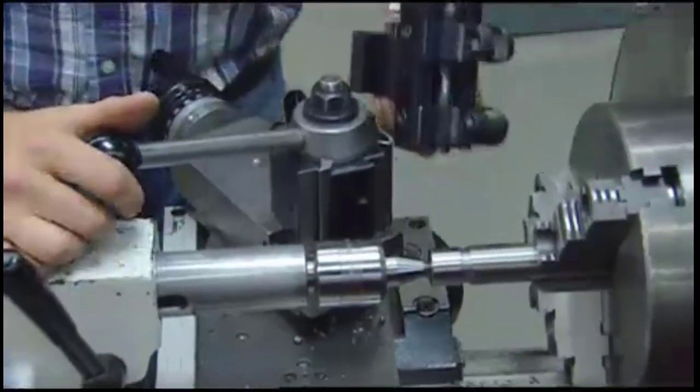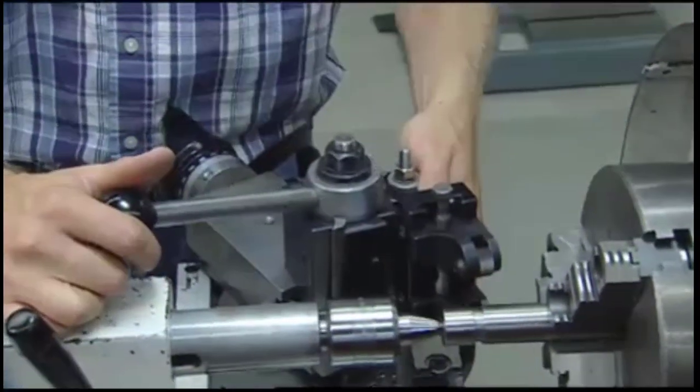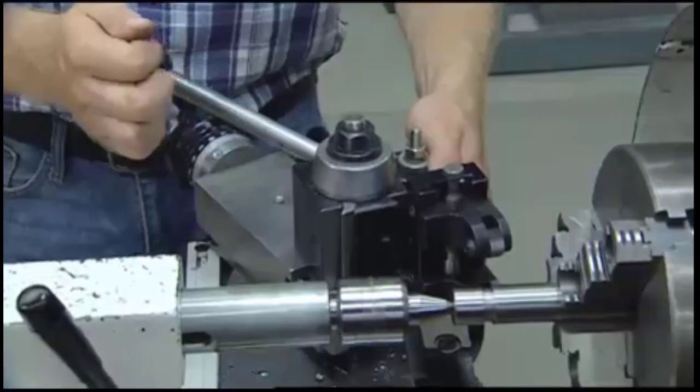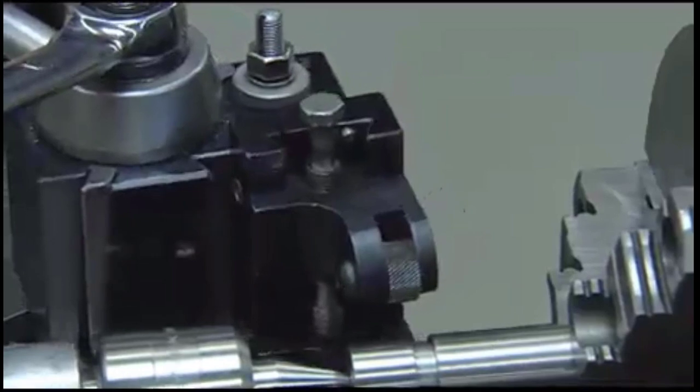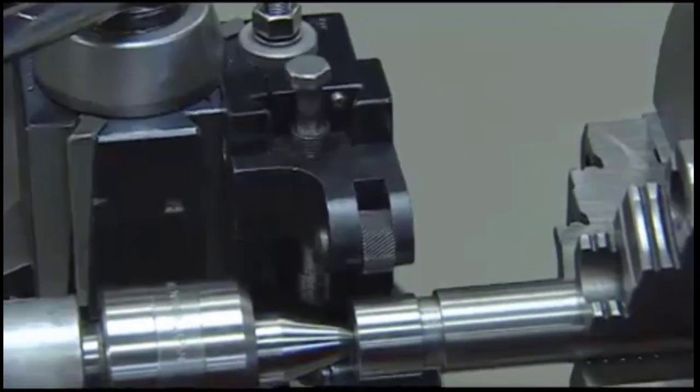To begin, set the spindle speed to about 150 rpm. Next, mount the knurling tool perpendicular to the workpiece, making sure that the knurling tool height is set on center.